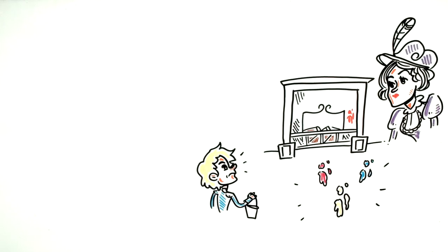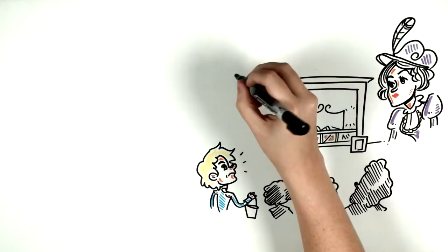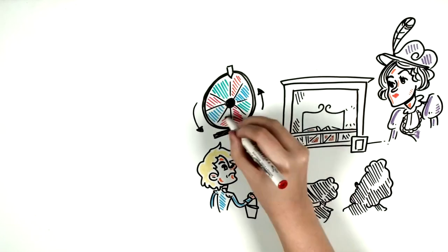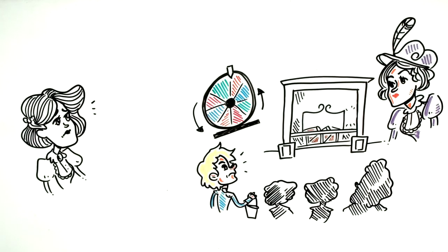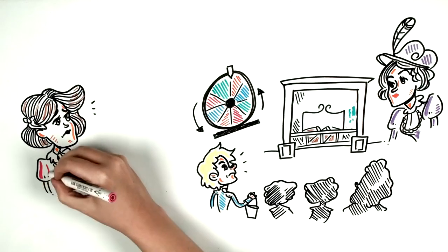So much so that every night they made bets between themselves to see what color the stain would have the next day. The only one who didn't participate in the fun was Virginia. Every morning she looked at the stain sadly and almost started crying the morning the stain turned green.